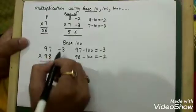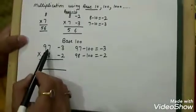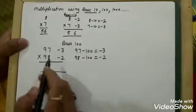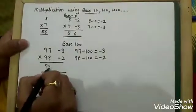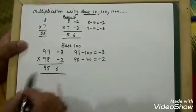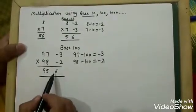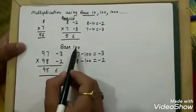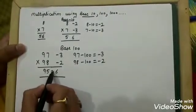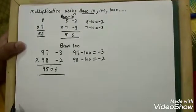So let's put minus 3 and minus 2. Now, 97 minus 2 is 95, and 98 minus 3 is again 95, so we put 95 here. Then 3 into 2 is 6 — minus minus converts to plus — but since the base is 100 with two zeros, we need a 2-digit number, so we place 06. The final answer is 9506.